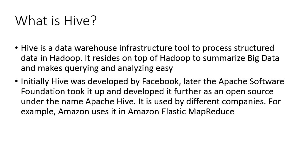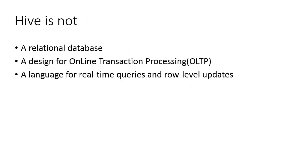Initially, Hive was developed by Facebook. Later, the Apache Software Foundation took it up and developed it further as an open-source project under the name Apache Hive. It is used by different companies — for example, Amazon uses it in Amazon Elastic MapReduce. Hive is not a relational database, and it is not designed for real-time queries and row-level updates.